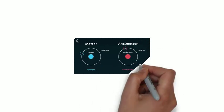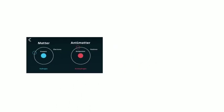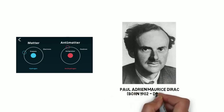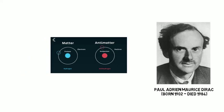In 1928, the modern theory of antimatter was introduced by the English theoretical physicist Paul Adrian Maurice Dirac, born 1902, died 1984, who predicted the possibility of the existence of anti-electrons.